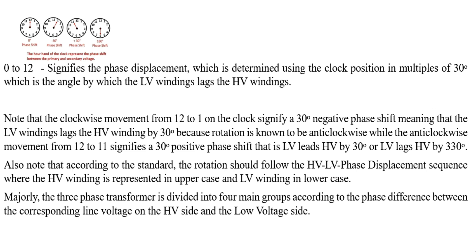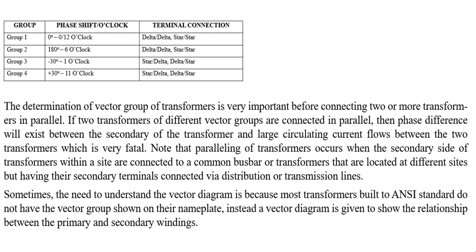The phase of a transformer is divided into four main groups. Group one is zero degrees — the clock sign is on 12 o'clock, and the only connections possible are delta-delta or star-star. Group two is 180 degrees, at 6 o'clock, which can also have delta-delta or star-star connection. Group three is minus 30 degrees, or 1 o'clock — it has moved clockwise from 12 to 1 — and can be either star-delta or delta-star connection. Group four is plus 30 degrees, or 11 o'clock, moving anti-clockwise from 12 to 11, and can also be star-delta or delta-star connection.